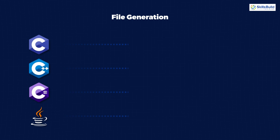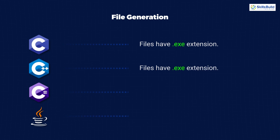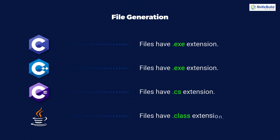If we talk about file generation: C programming files have a .exe extension, C++ files also have a .exe extension, C# programming files have a .cs extension, and Java produces .class files.